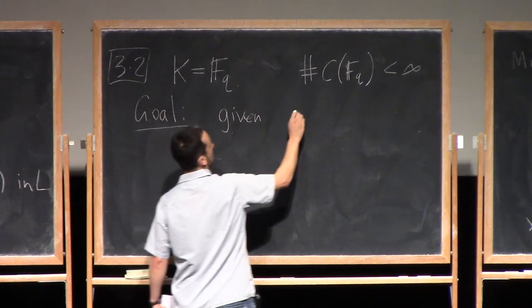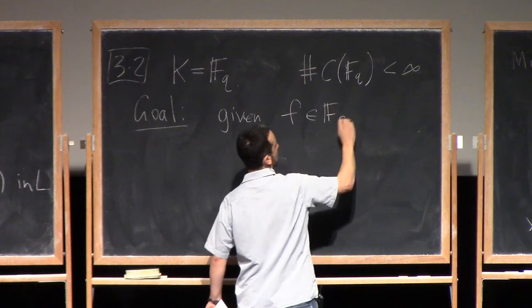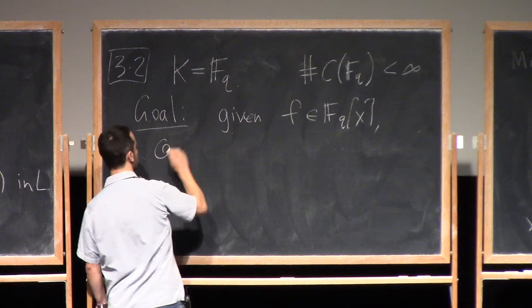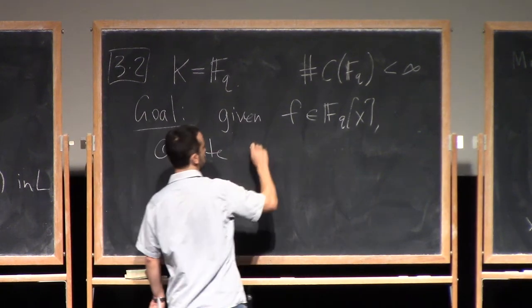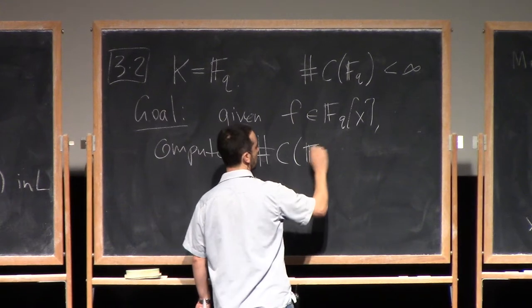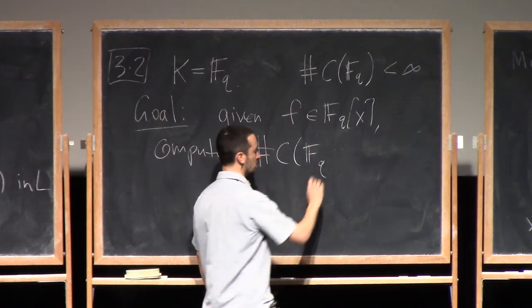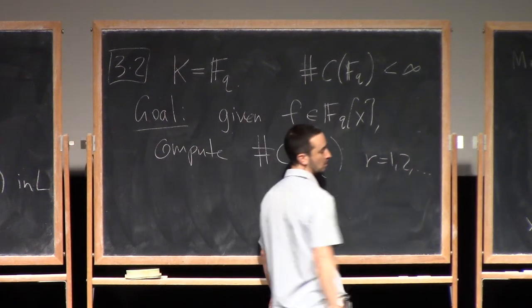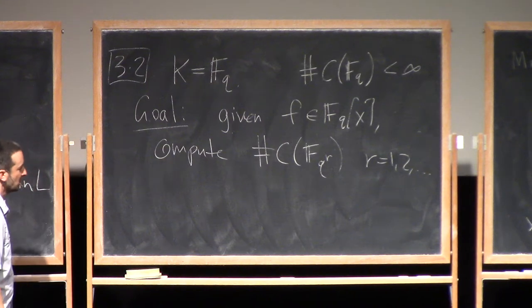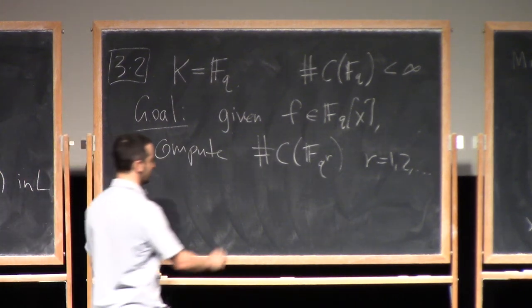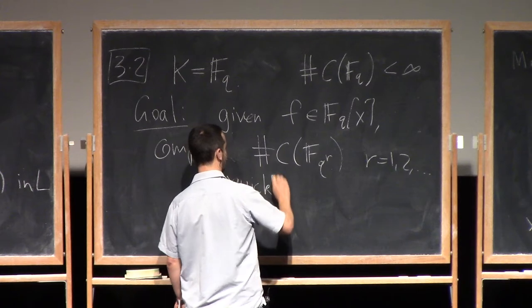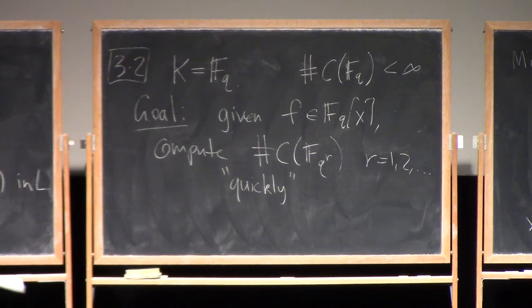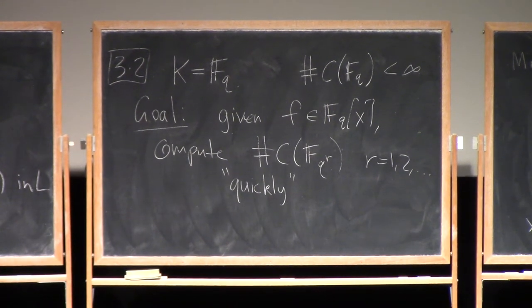So the goal of the course is given F, so this is the polynomial describing the curve, compute this number, and maybe even over extensions, F_q to the r, for r being one, two, and so on. I want to compute these numbers quickly.